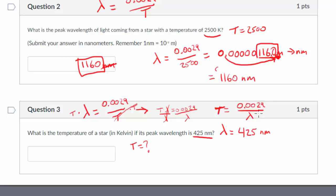But keep in mind, this lambda has to be in units of meters. And we're given the wavelength in nanometers. Remember, that 425 nanometers means times 10 to the negative 9. So as we solve this problem, the temperature equals 0.0029 divided by, I'm going to put this whole thing in parentheses, 425 times 10 to the negative 9.